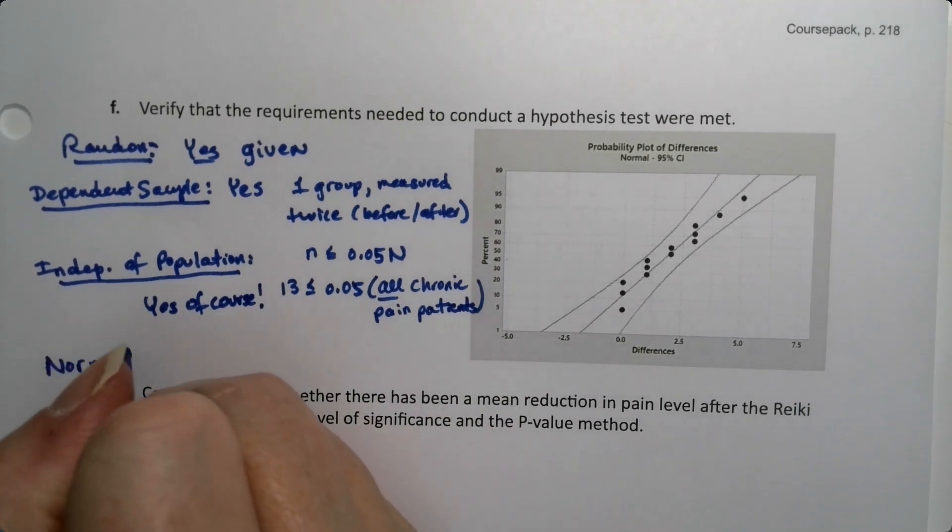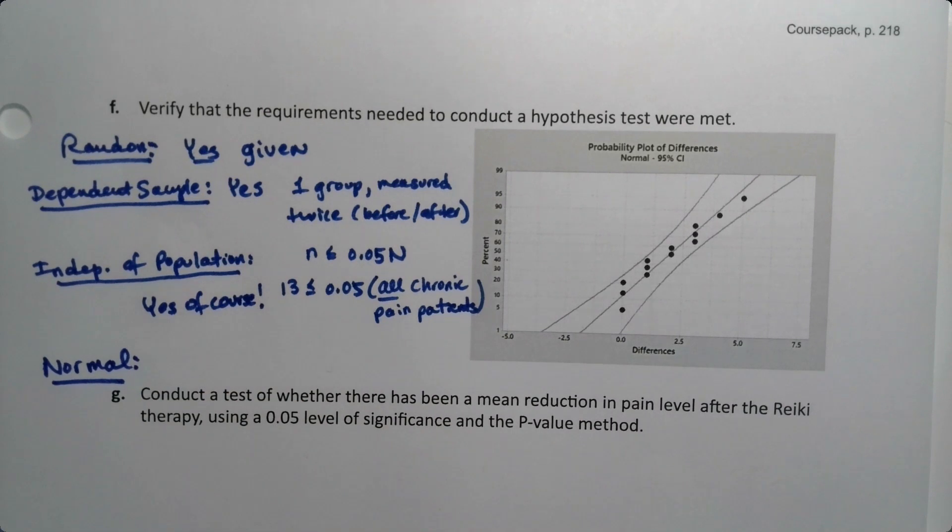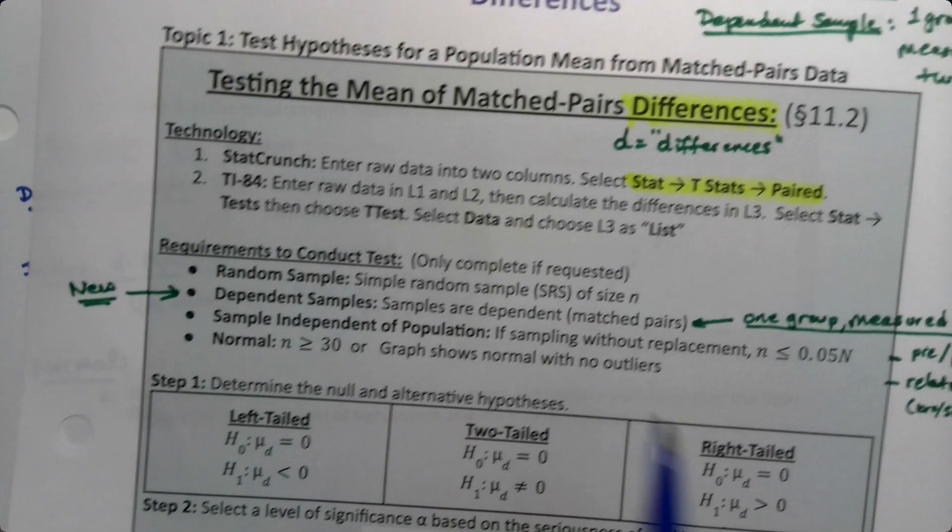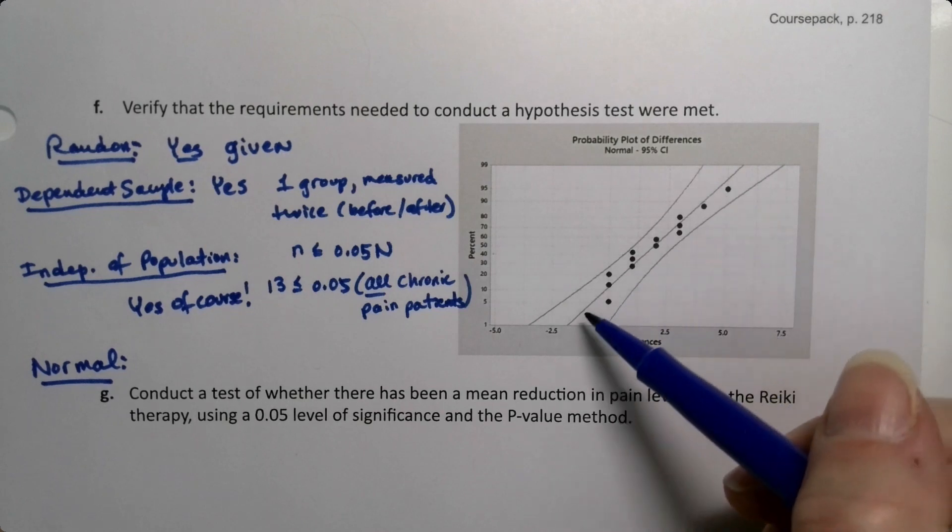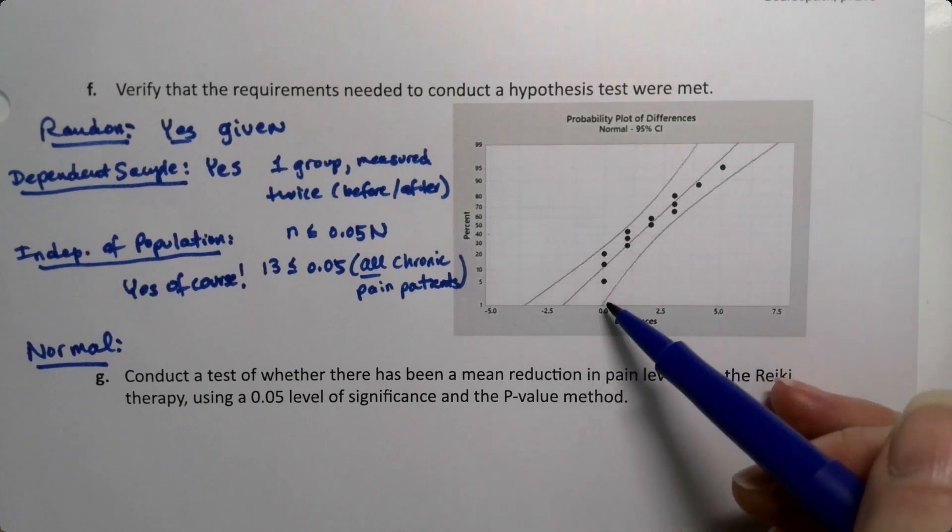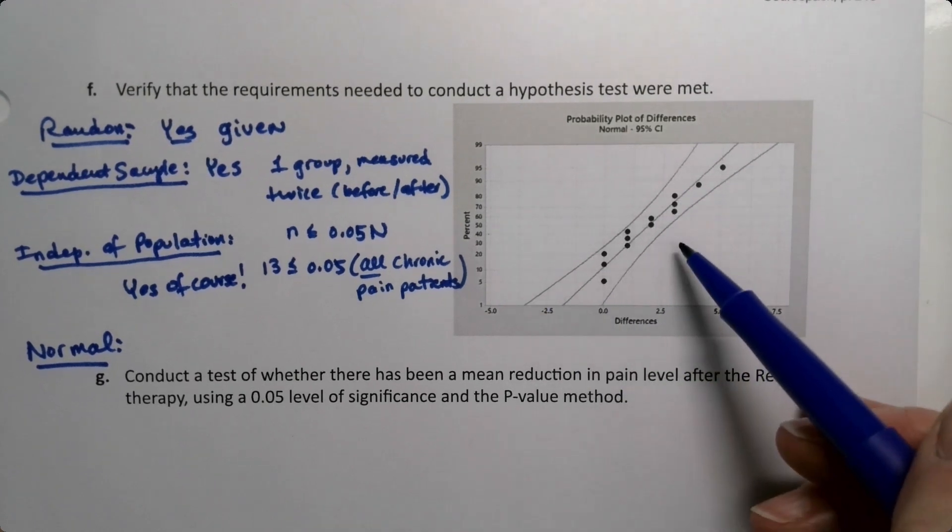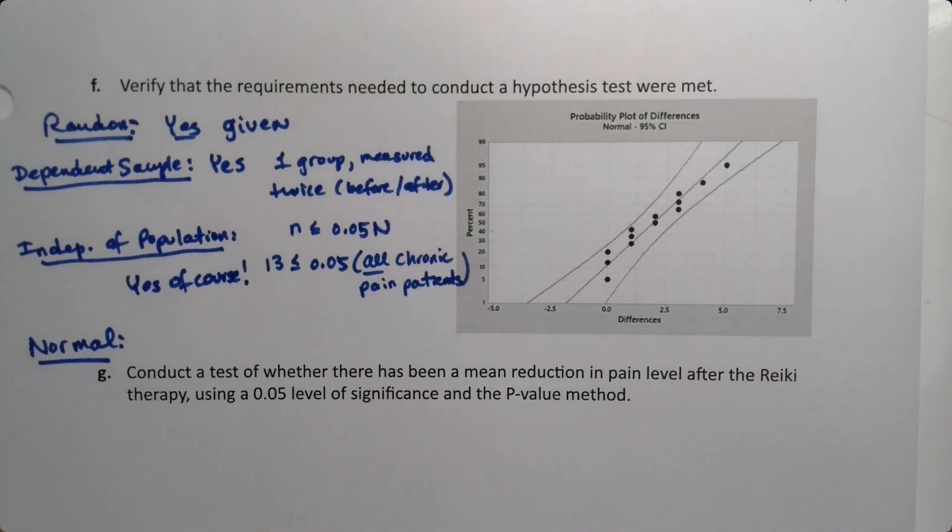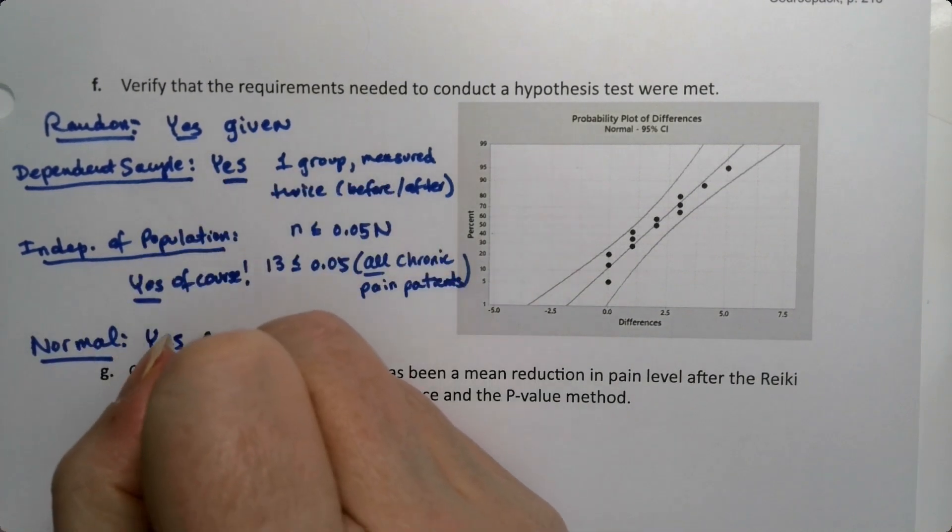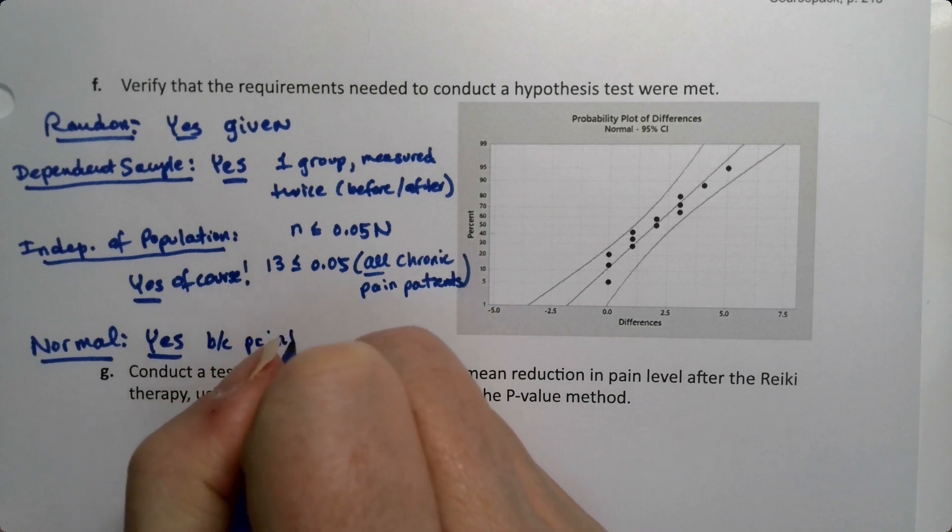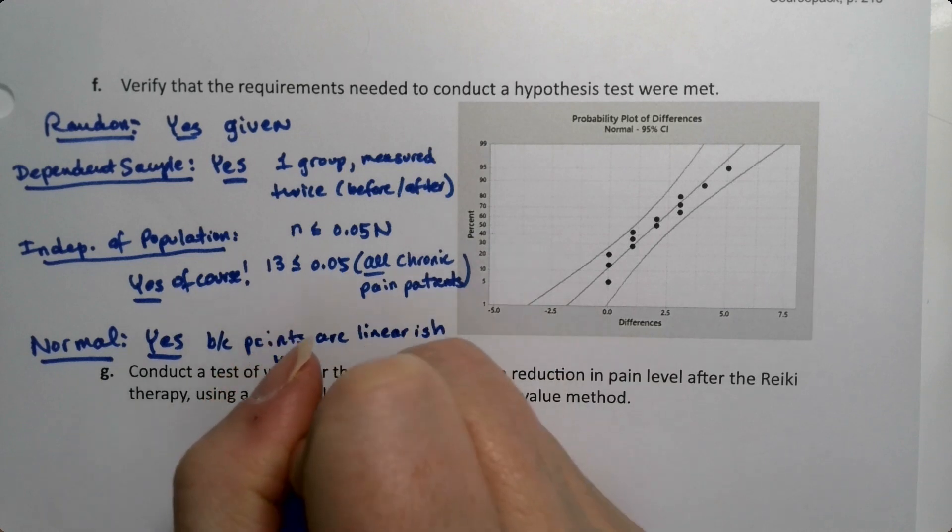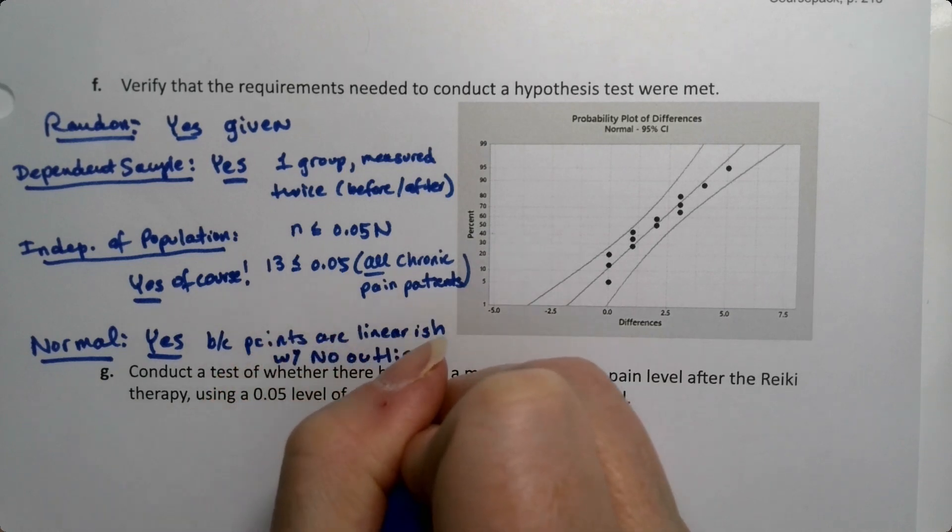Normal is kind of weird because it says that for normal we need n to be bigger than 30, which we do not have, or we could have a graph that shows normal, which we do. The points are all linear-ish within those boundaries. This is actually a different program that I made this one with, which I really like because it shows the boundary lines. If any dot is past those boundary lines, no good. But we don't have any dots past those boundary lines so we're okay. So we have four yeses because the points are linear-ish with no outliers.